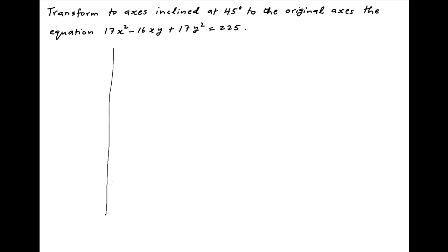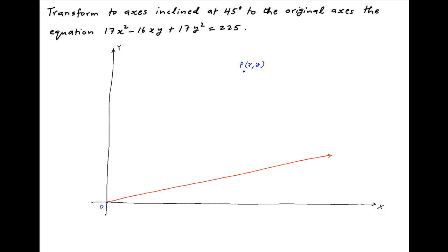Let's start by plotting this information on the Cartesian plane. Let's assume that the original axes are OX and OY. Let's assume that there is a point P with coordinates XY on this Cartesian plane. Now the axes are rotated by an angle alpha. Let's assume that the new axes are OX' and OY'.